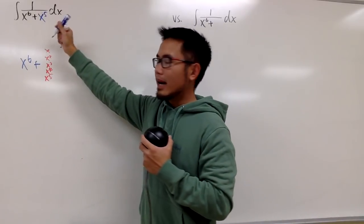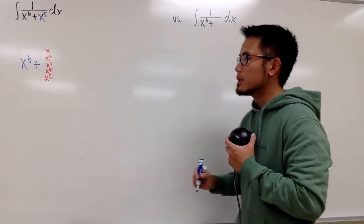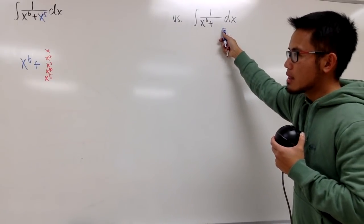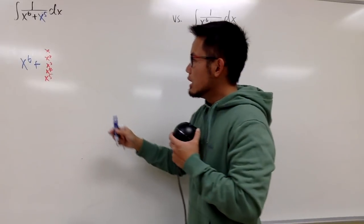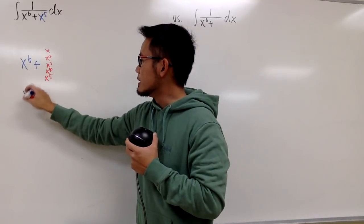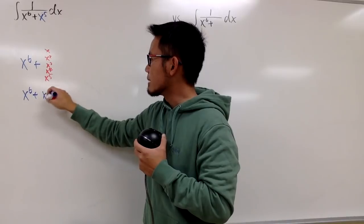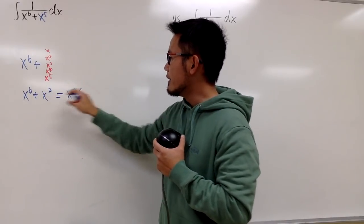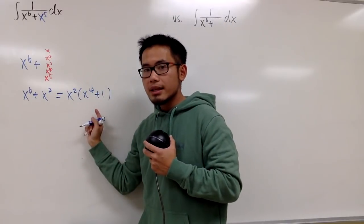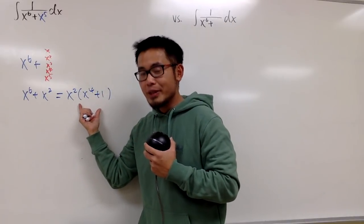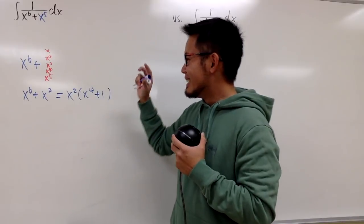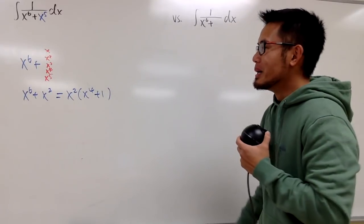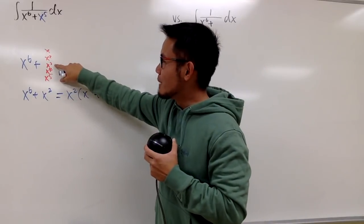For the first one, I would like to just add x to the 5th power. On the other hand, suppose I want to do x to the 6th power plus x to the 2nd power. In that case, I can only factor out x squared and get x to the 4th power plus 1. This right here, you can keep factoring it, but the partial fraction for this is also going to be pretty horrible.